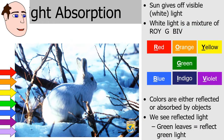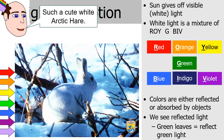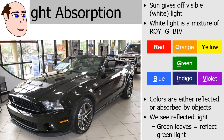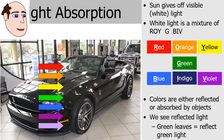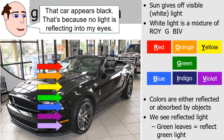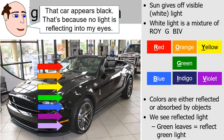White objects appear white because they reflect all wavelengths — all those wavelengths enter our eyes and our brain interprets this as white. The opposite effect occurs with black objects: when light shines on a black object, no light reflects into our eyes. The black object absorbs all the colors, and we interpret that as the color black.